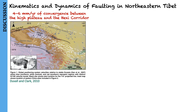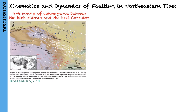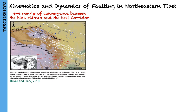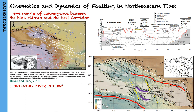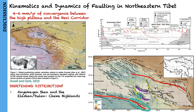This paper also discusses how shortening is distributed across northeastern Tibet, comparing the rates found with modern geodetic estimates and previous studies. If the present-day rate of 4 to 6 mm per year of convergence between the High Plateau and the Hoshi Corridor observed in geodetic data is representative of geologic rates, then additional shortening or strike-slip faulting must be distributed elsewhere in northeastern Tibet. Possibilities include the Anyemaqen Shan, Elashan-Dulan-Chaka Highlands, or faults interior to the Qilian Shan north of Qinghai Lake, although no active faults have been recognized in the latter region.